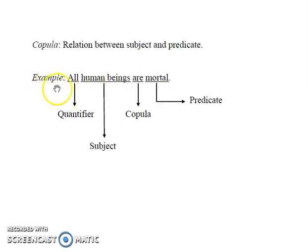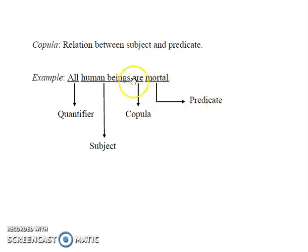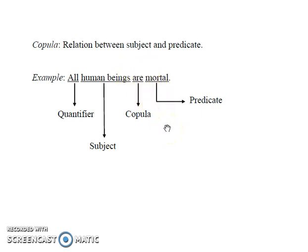Consider the example: 'All human beings are mortal.' In this statement, 'all' is the quantifier, 'human beings' is the subject, 'mortal' is the predicate, and 'are' is the copula. 'All' is the word quantifying the number of human beings we are talking about. 'Human beings' is the subject as we are talking about them. 'Mortal' is the predicate as it tells us about the nature of the subject. And 'are' is the copula as it explains the relationship between human beings and mortality.